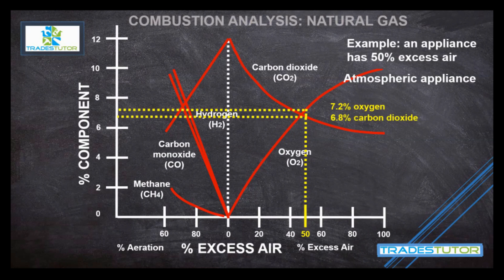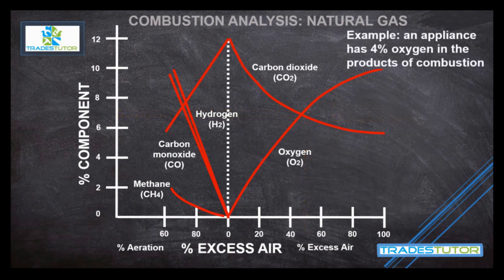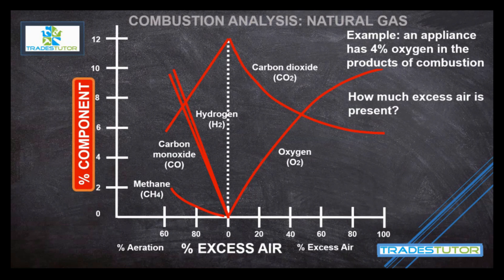But what if we had the reverse? What if we were given a component, the percent of a component and had to go the reverse. So let's try that. All right, you got 4% oxygen in the products of combustion. How much excess air is present? So go over to the percent component part. 4%. There you go. There's your line. Now come across. Go to the right until you hit the oxygen line. And then go down. And you get about 25% excess air. There you go.